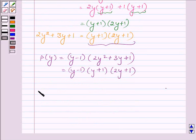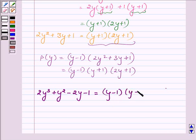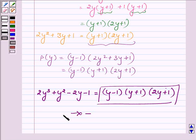And thus when factorizing the given polynomial which is 2y³ + y² - 2y - 1 we get the factors as (y-1)(y+1)(2y+1). So this completes the solution, hope you enjoyed it, take care and have a good day.